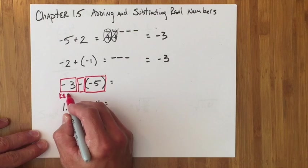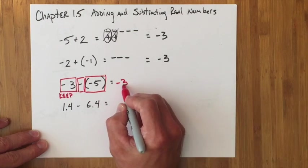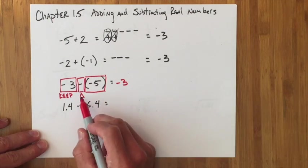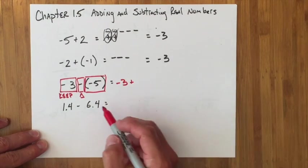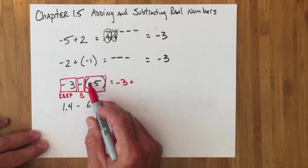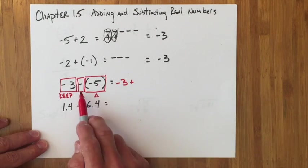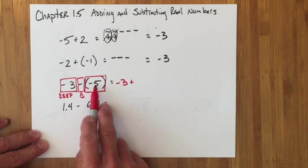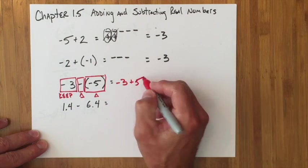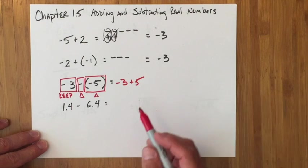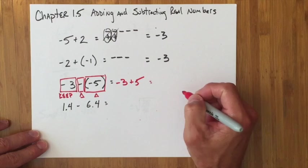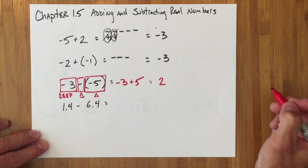So you would keep the first part the same, you would change the symbol from minus to plus, and then you would change this thing to its opposite. So I mean, technically you're changing this to its opposite as well. So negative 5 changes to its opposite of positive 5, and essentially all you've done is now turned it into a problem you could solve using this technique. You're going to get positive 2.